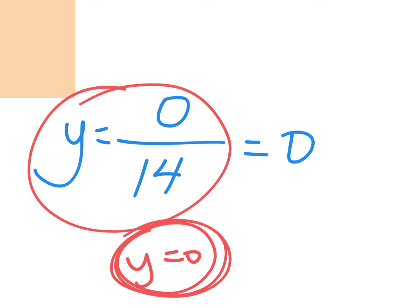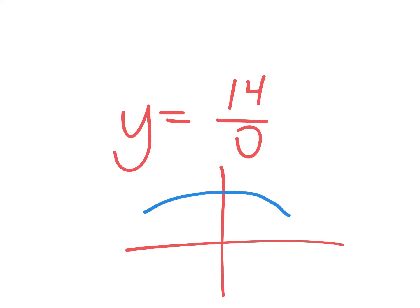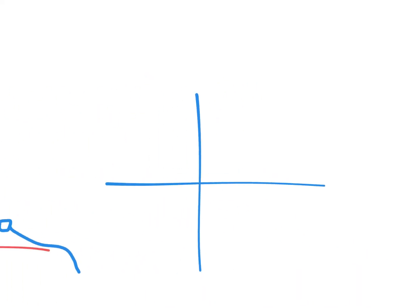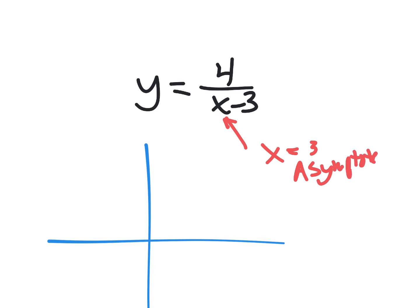But if your function ever turns into y equals 14 over zero, then that can't exist. When you're graphing this function and you come to something like that, it can't exist — so at that moment your function might just have an empty spot. That's called a hole. Or there could be an asymptote — like 4 over x minus 3. You'd have a problem when x equals 3 because it makes the bottom zero. So if it makes the bottom zero, it's probably a hole or an asymptote.